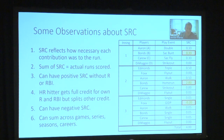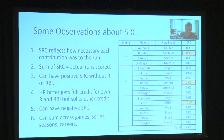Even though no run scored in that inning, the players' SRC still sums to zero, but there is an allocation of credit that can be positive or negative. You can take the SRC and sum it across games, series, seasons, and careers — it's very easily aggregated.